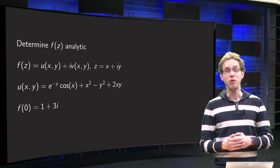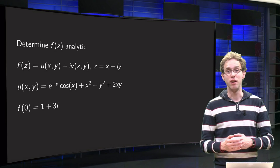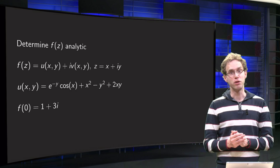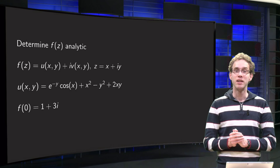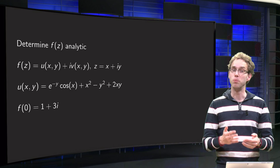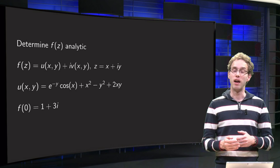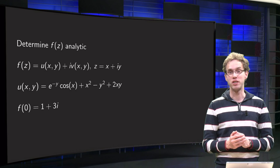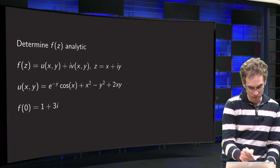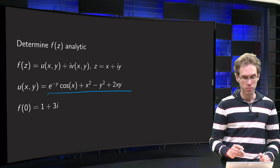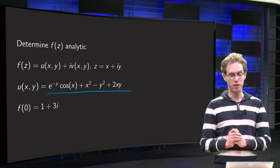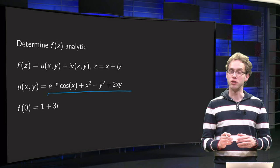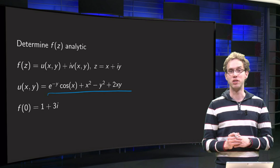In this video you will learn how you can find your analytic function if, for example, only the real part is given. We are looking for some function f of z, analytic, written as f equals u plus i times v, with z equals x plus iy. Only the u part is given: u equals e to the power minus y times cosine x, plus x squared minus y squared plus 2xy. Furthermore, f of 0 is given just to specify the constant later on.